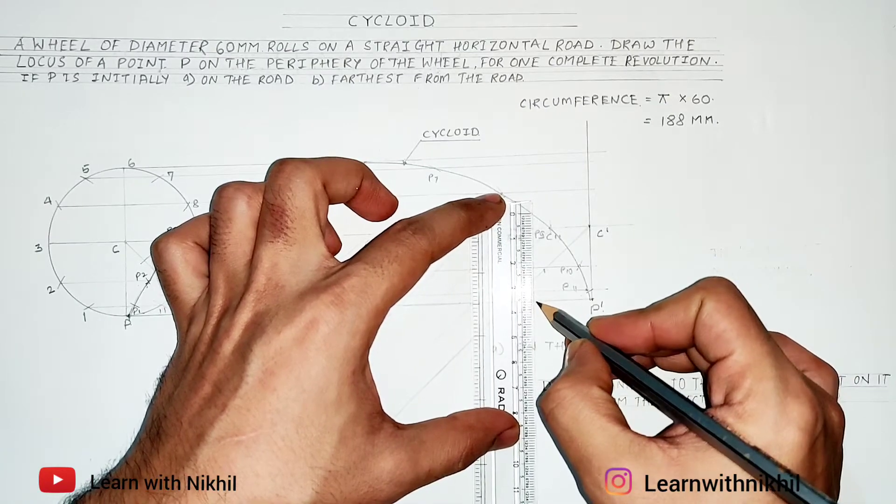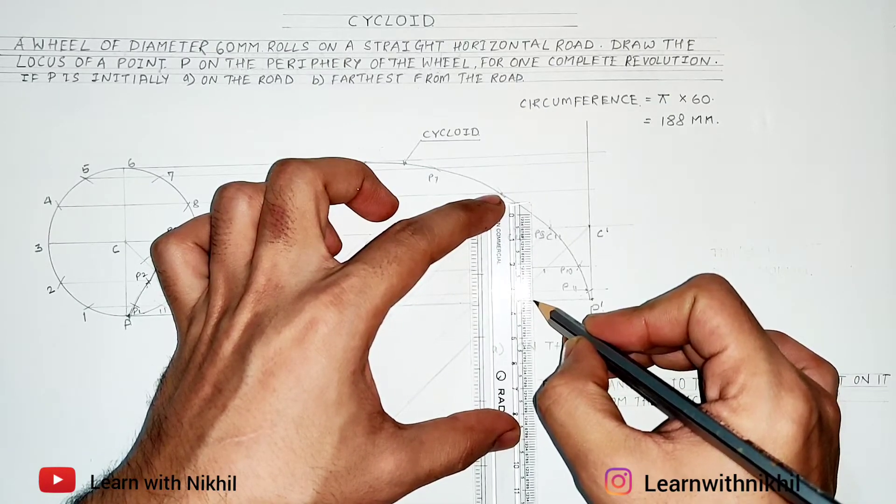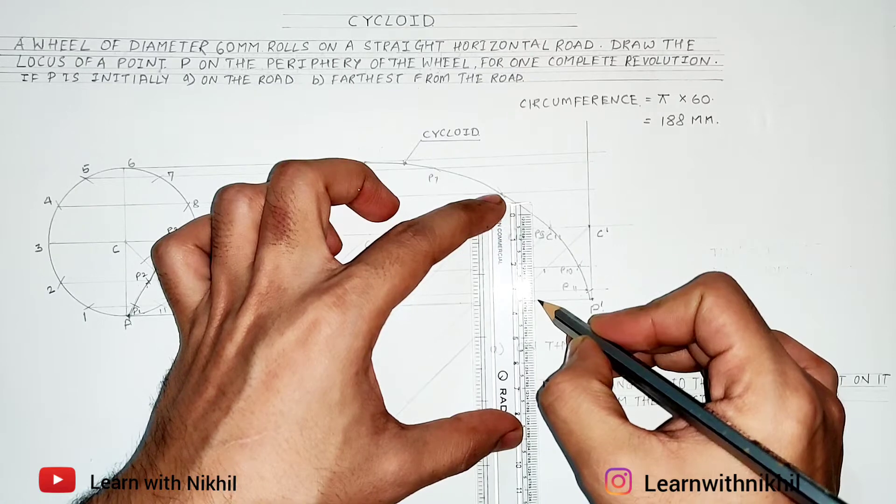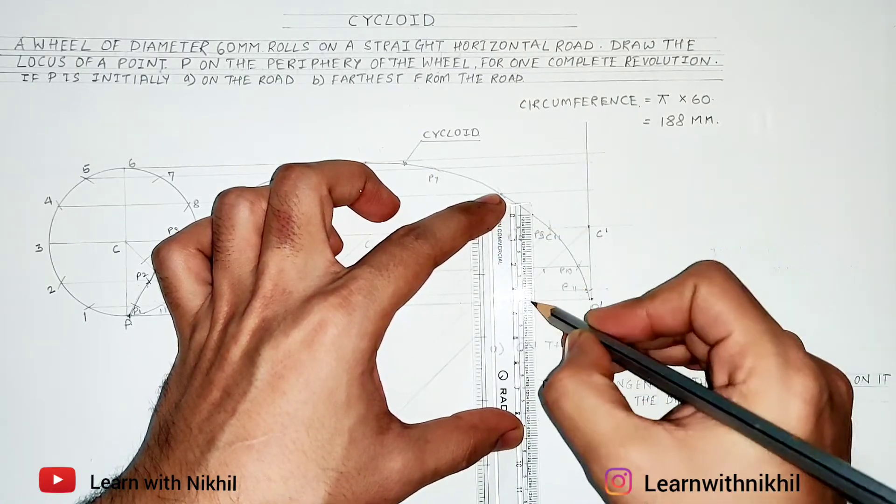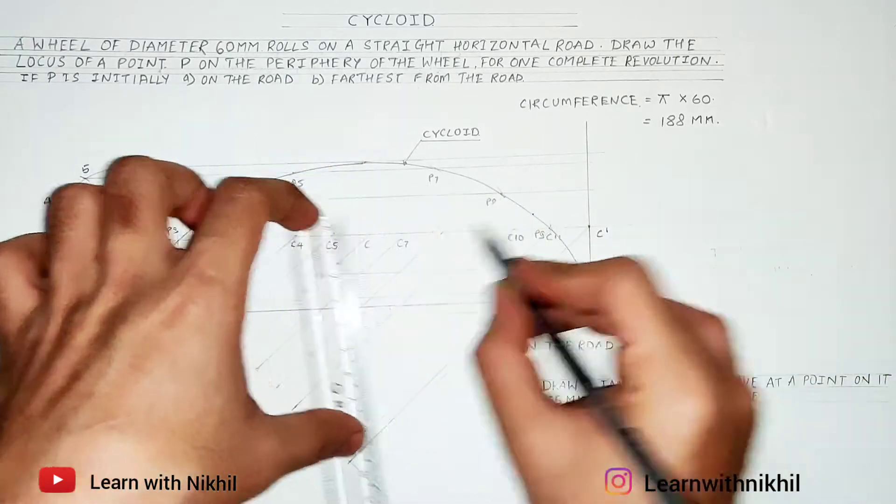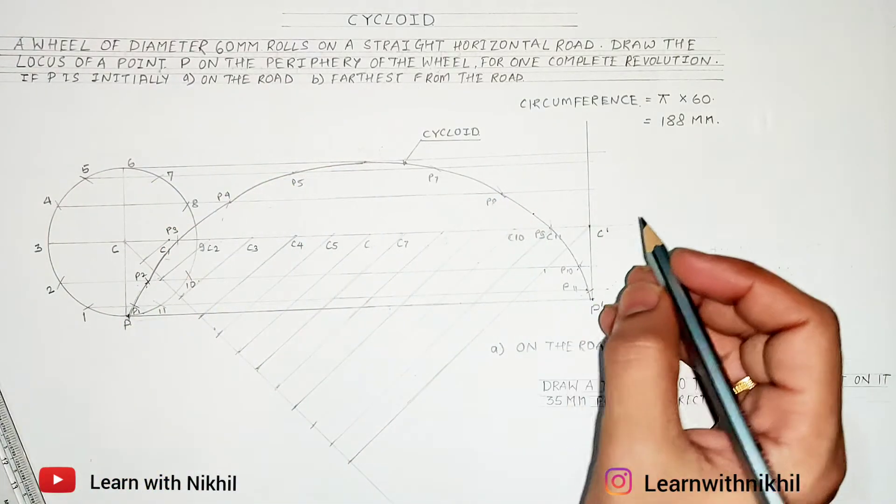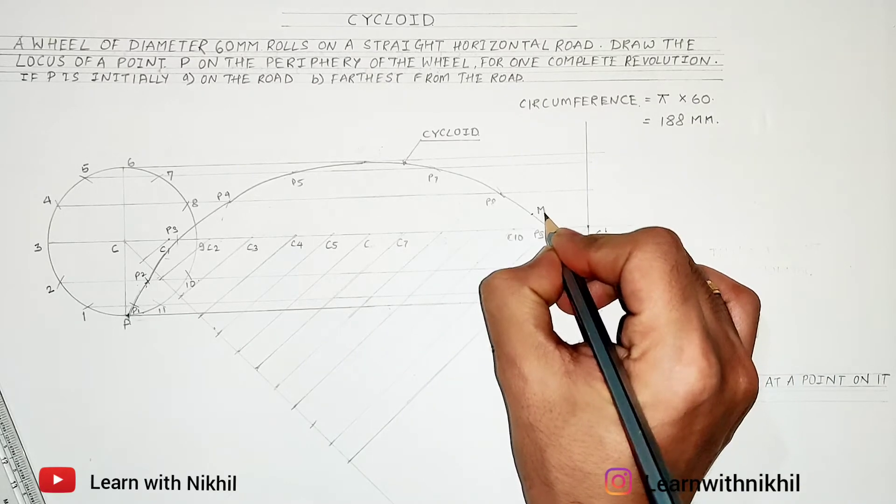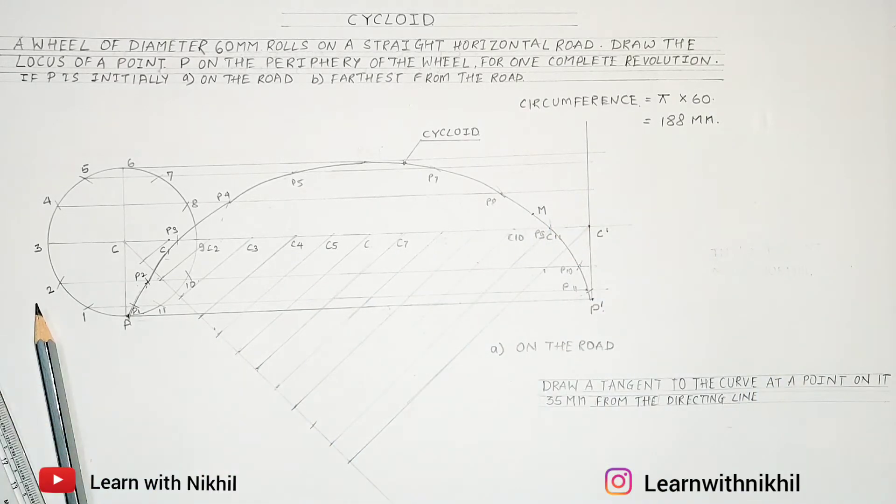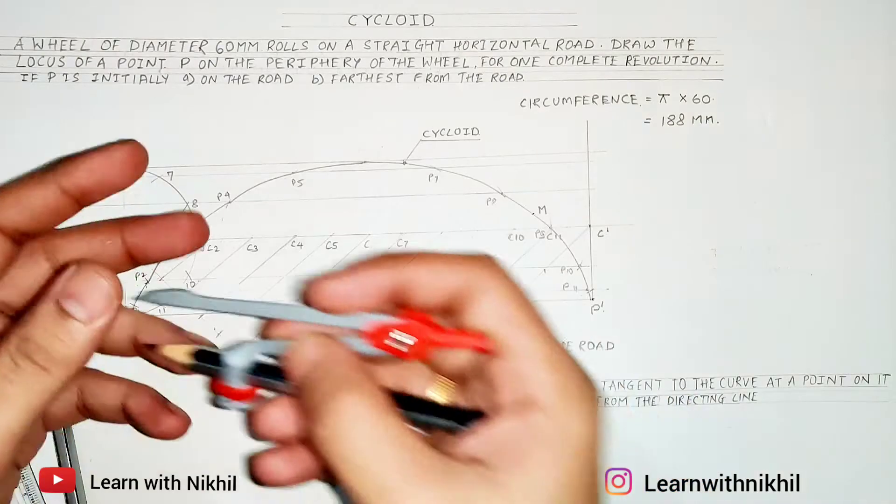35 millimeter above from the directing line we will mark a point on the cycloid curve. So I just aligned it and put a point on the curve. Mark that point as M. Now next step, on compass I'll take